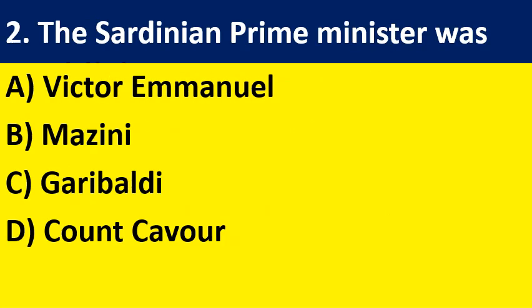The second question: the Sardinian Prime Minister was — option A: Victor Emmanuel; option B: Mazzini; option C: Garibaldi; option D: Count Cavour. Choose the correct answer among the options.